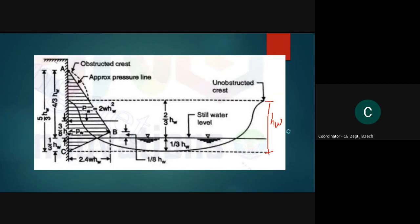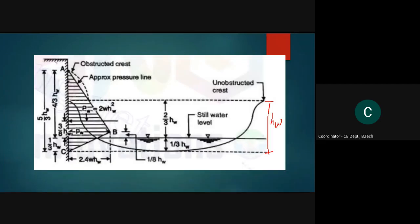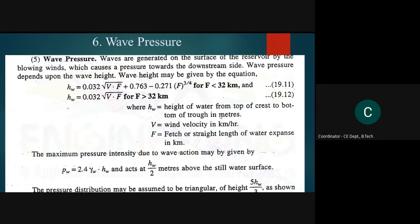HW is the height of water from the top of the crest to the bottom of the trough in meters. HW can be calculated knowing two parameters: the wind velocity and the fetch, or straight length of water expanse, in kilometers — meaning how far the water extends.